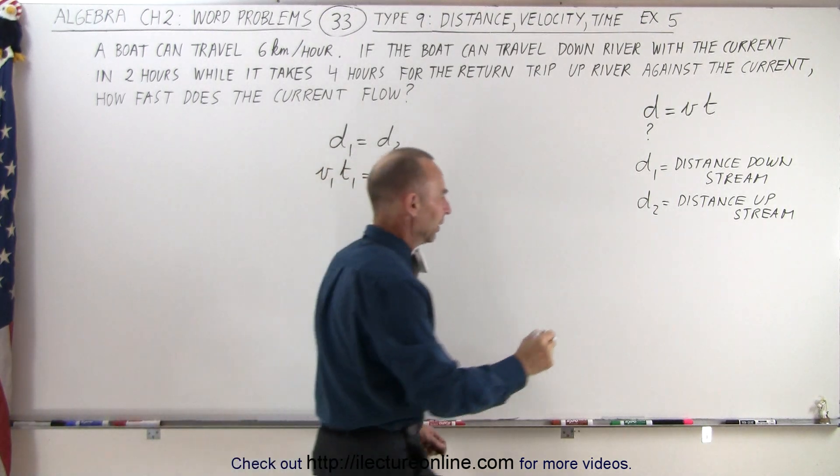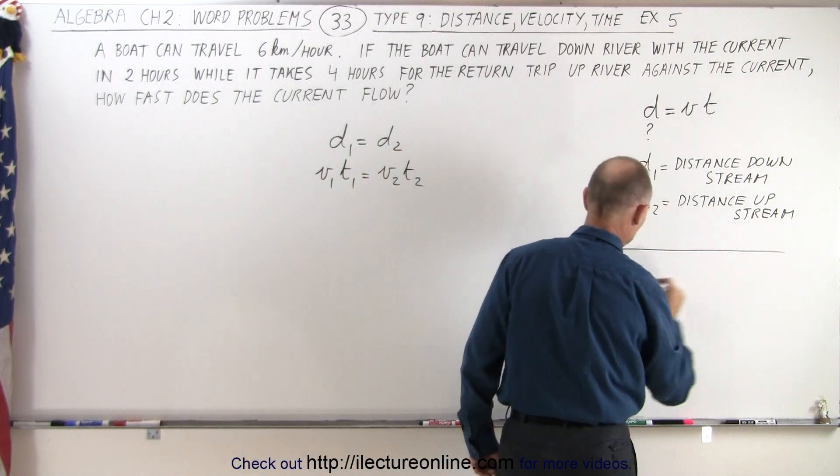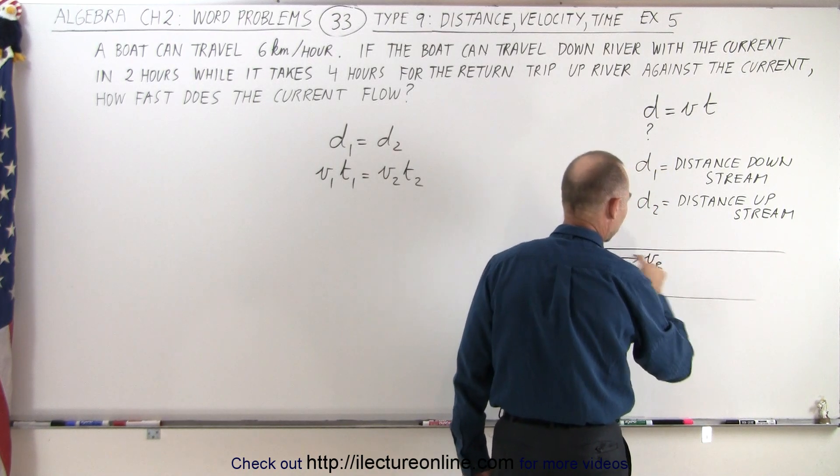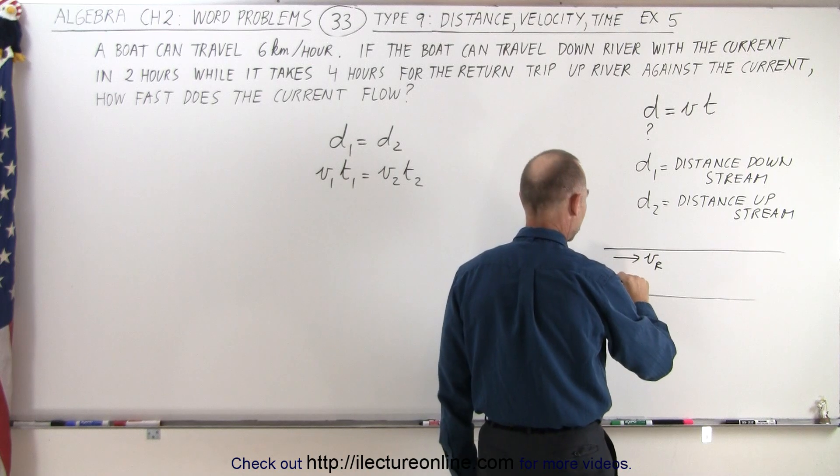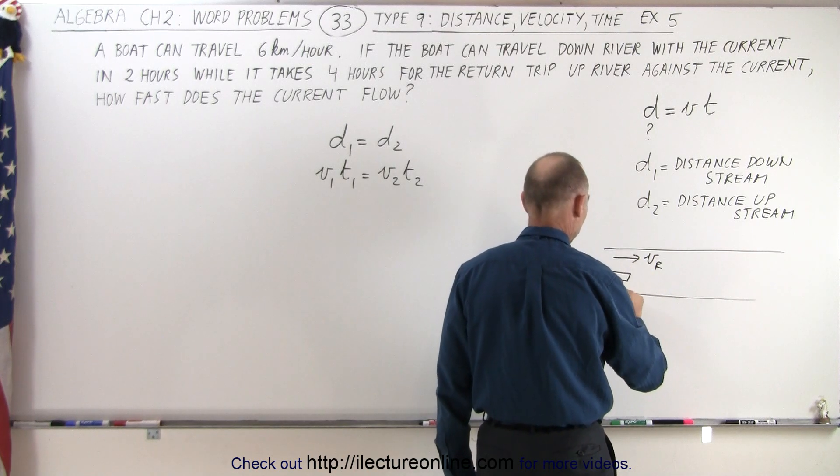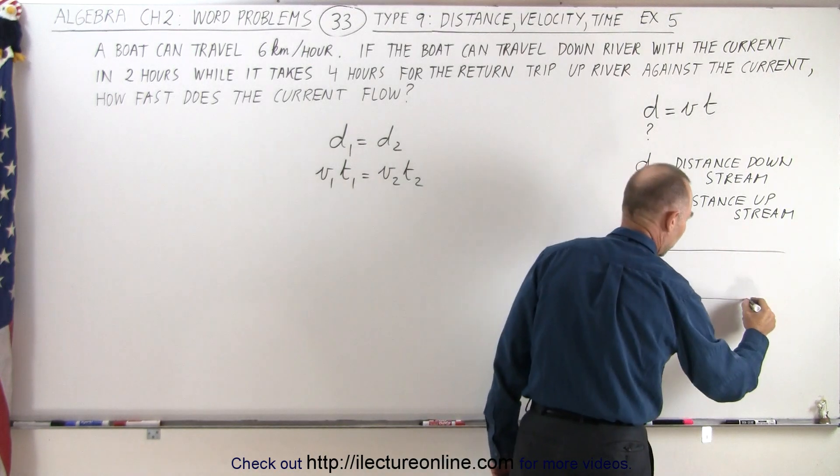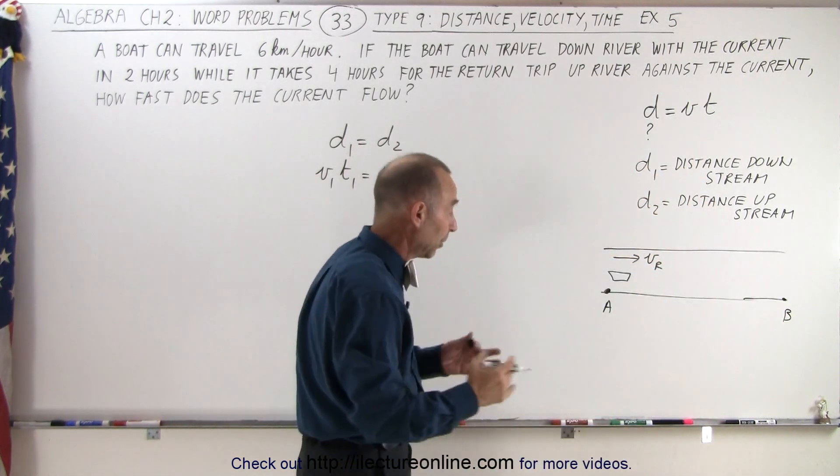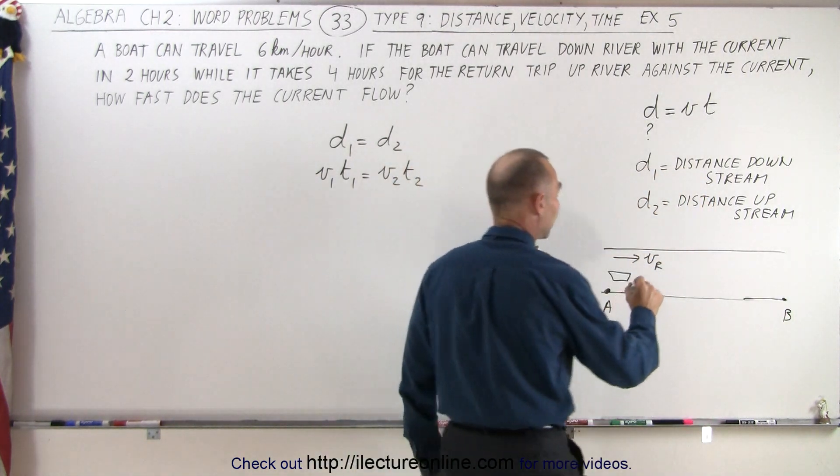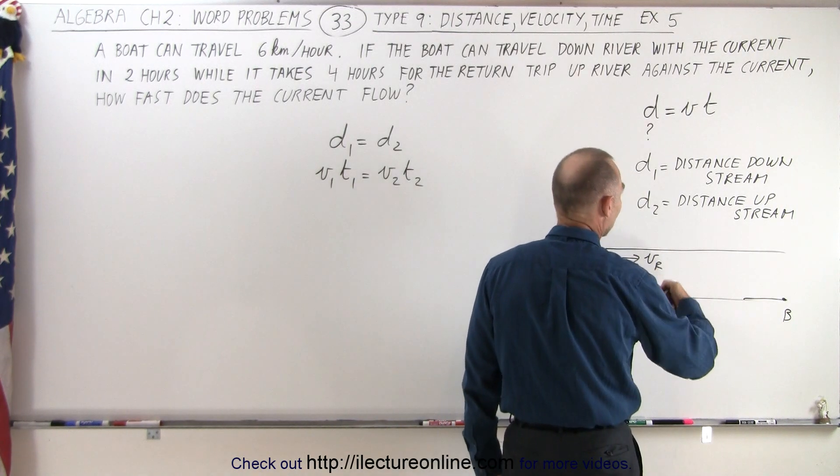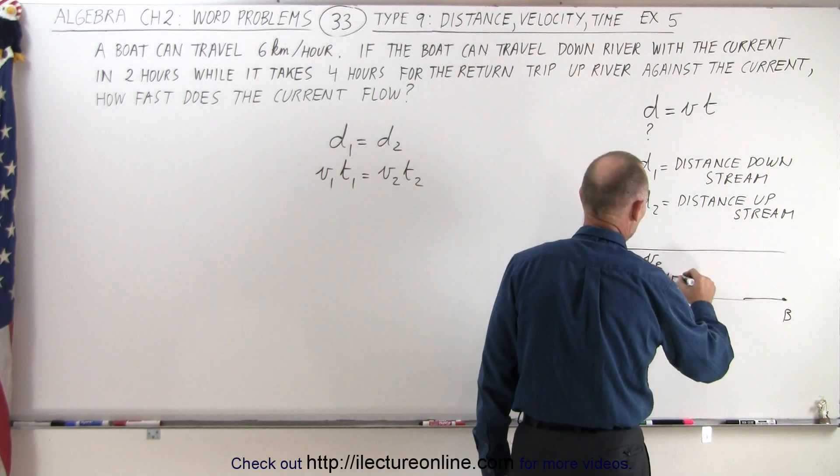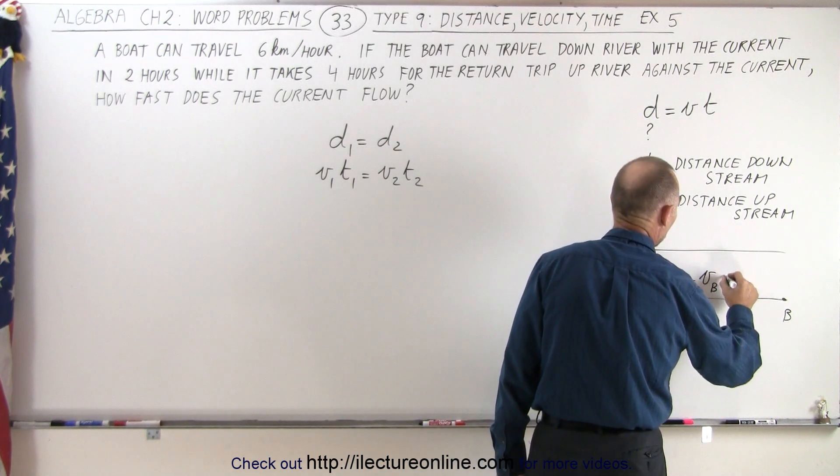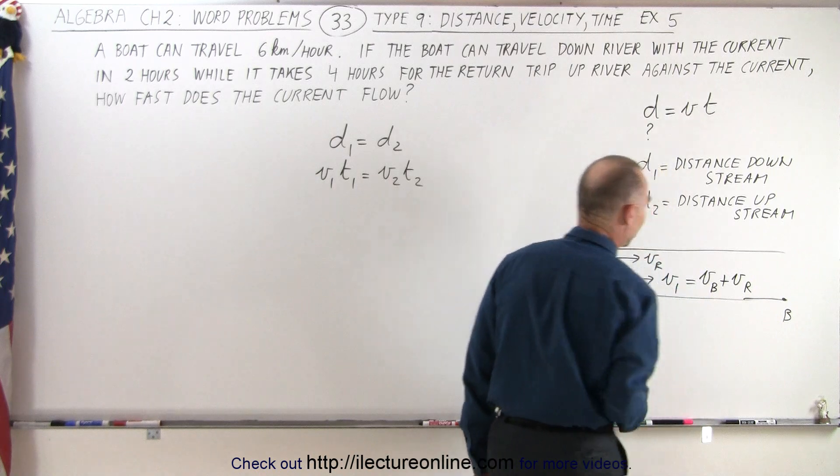So let's make a little diagram here. Let's say we're traveling down the river. We know that the velocity of the river is in this direction. So when we take our boat and we travel from point A to point B on the river, we don't know where point A or point B is, we don't know how far it is, but we don't need to know. We know that the velocity of the boat will then be added to the velocity of the river. So v1 downstream is going to be equal to the velocity of the boat plus the velocity of the river.